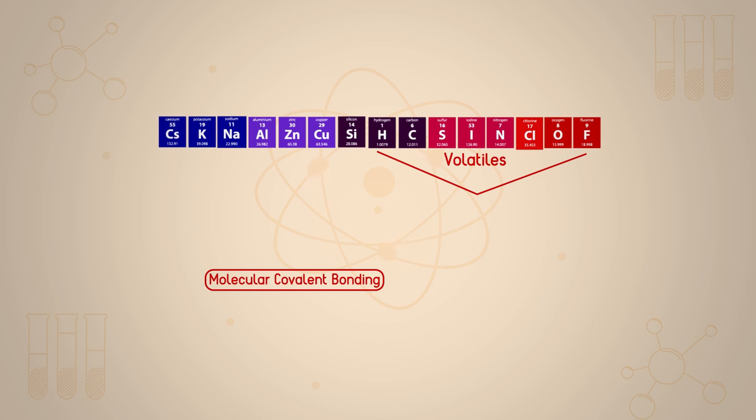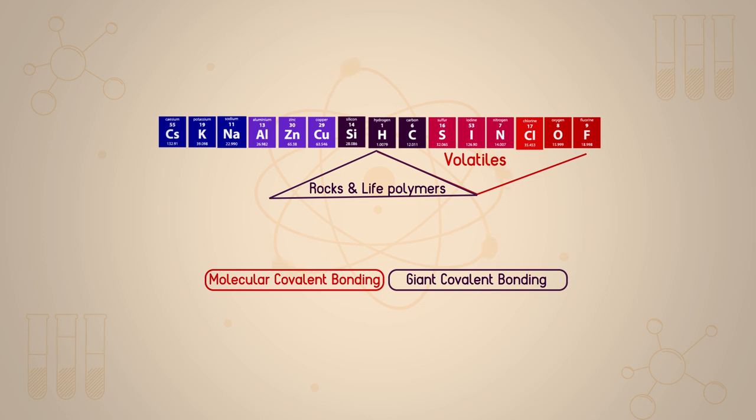Compounds of carbon and silicon will give rise to brittle rock-like or polymerized giant structures - giant covalent bonding. Metallic elements will bond together to form metallic structures with loose electrons: metallic bonding.